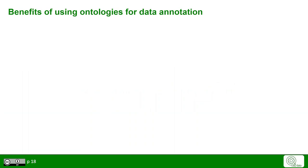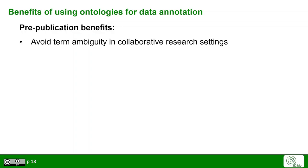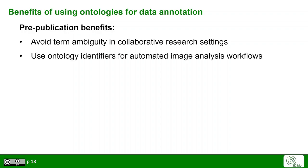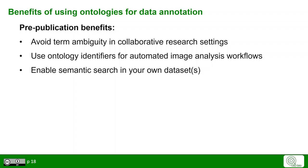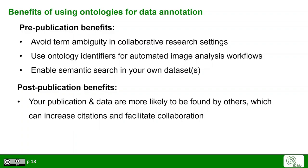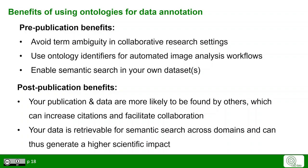Using ontologies may seem like extra work at first, but the benefits are significant. Before publication, sticking to ontology-controlled terms avoids ambiguity in collaborative research settings, and you can use identifiers for automated image analysis workflows instead of natural language terms. Over time you will be able to do semantic search in your own data, adding value to current and former datasets. Post-publication, well-annotated data based on ontology terms is more likely to be found in search engines, increasing citations and facilitating collaboration. Your data also becomes retrievable for semantic search across domains, generating significantly higher scientific impact in the long run.